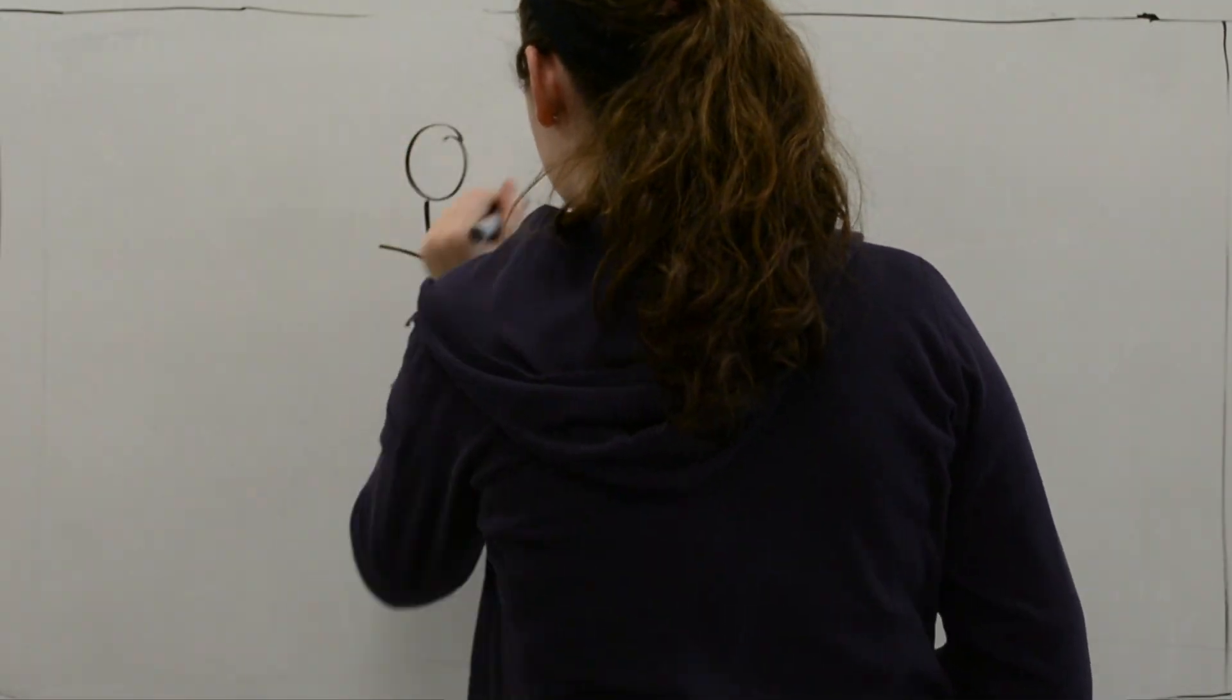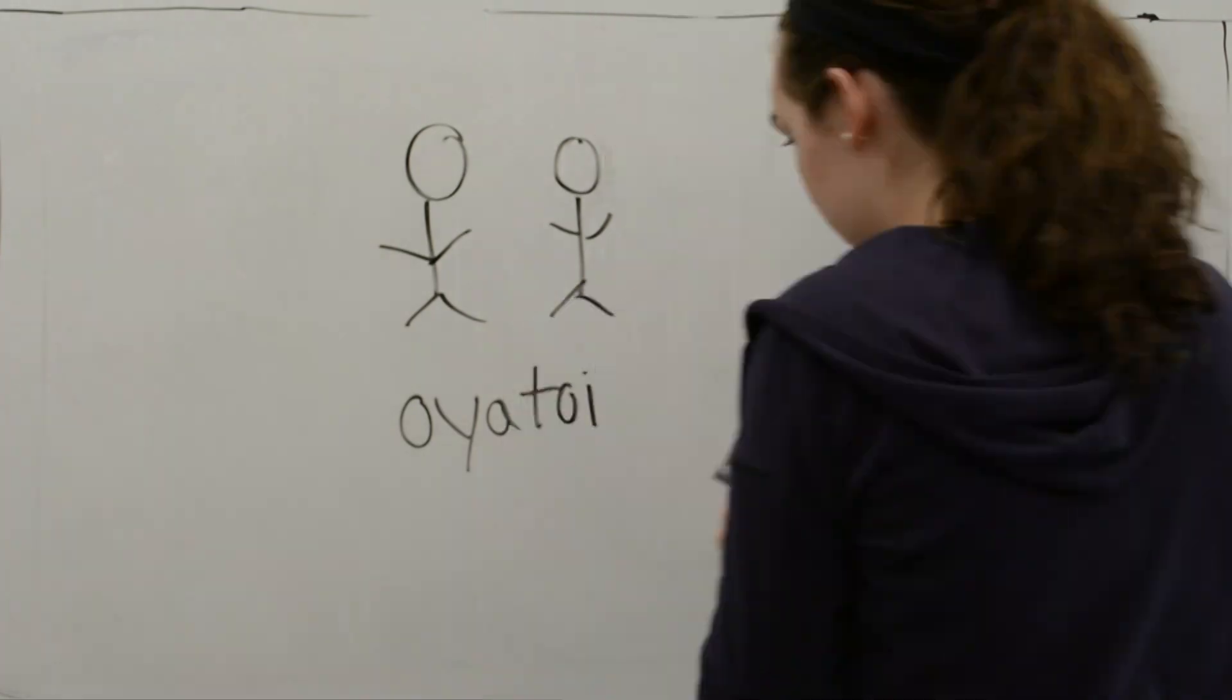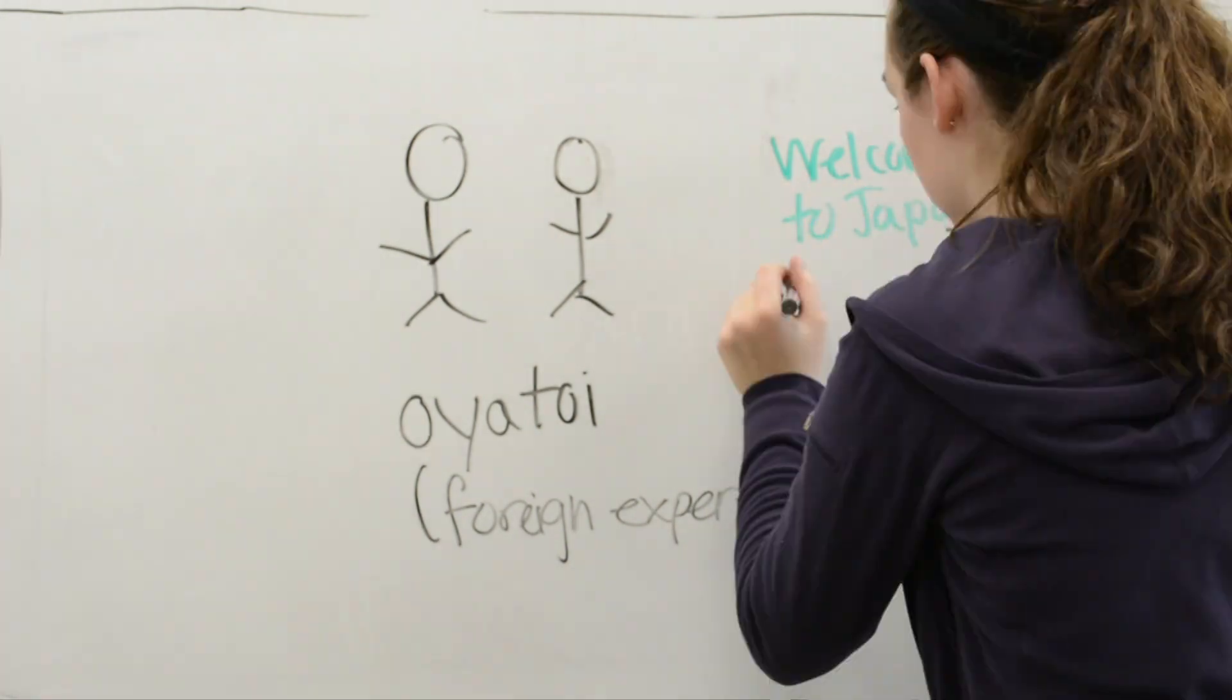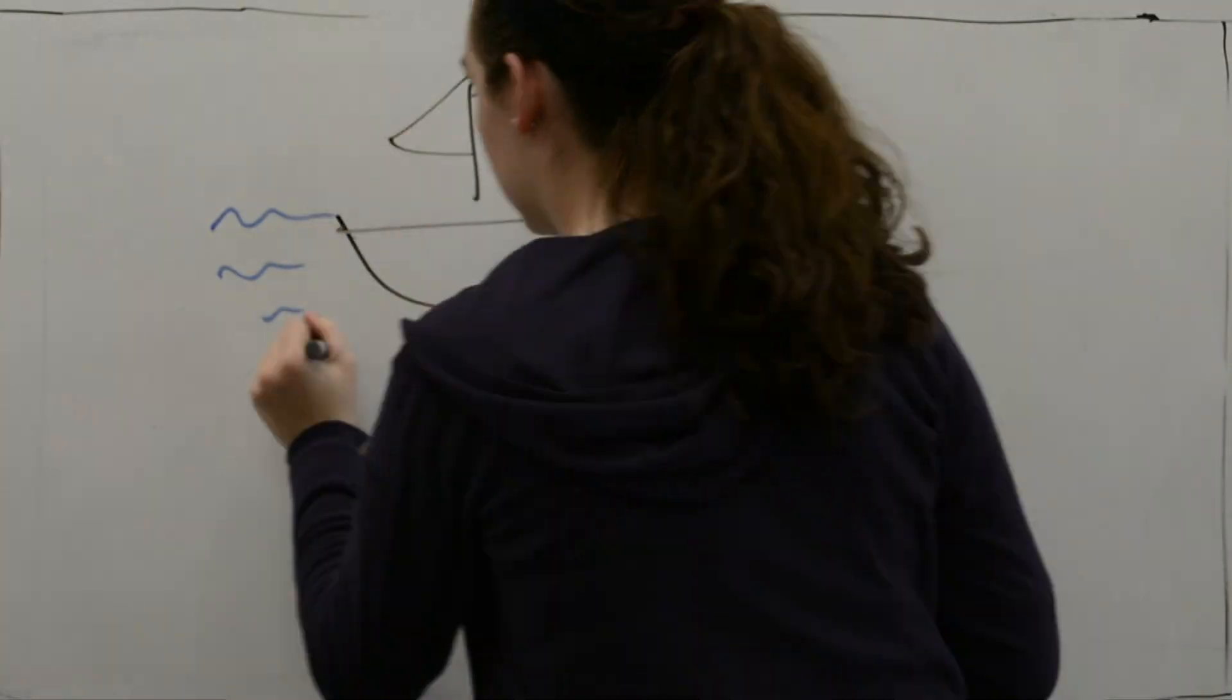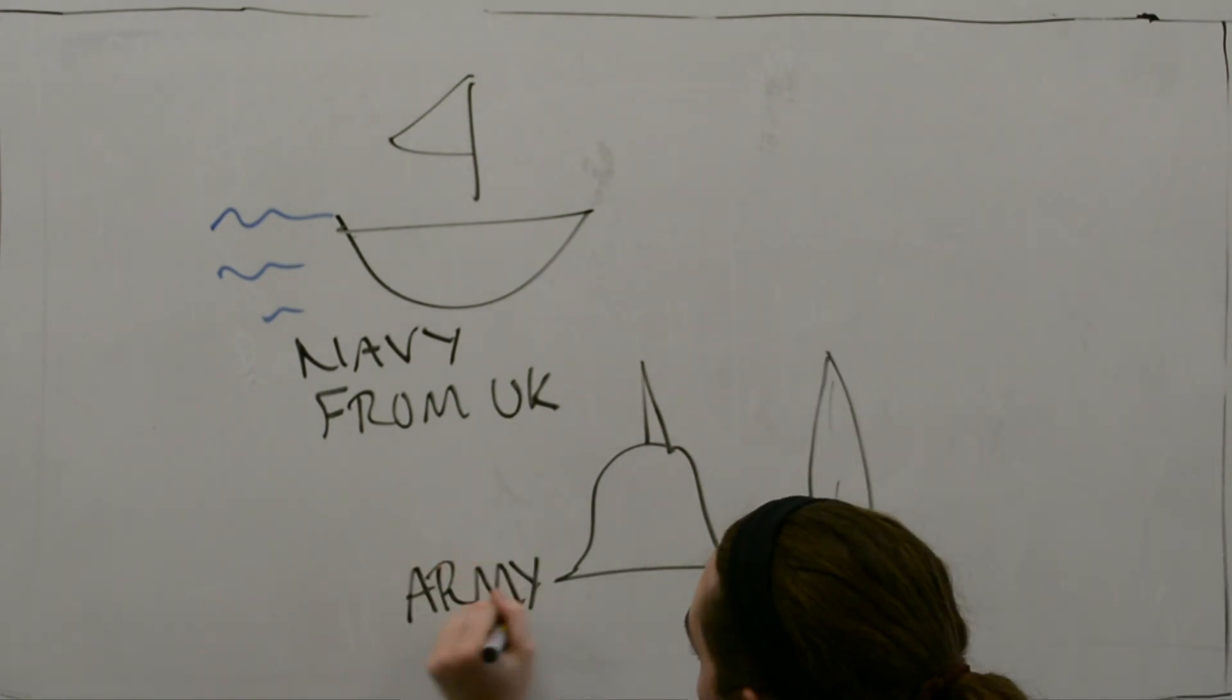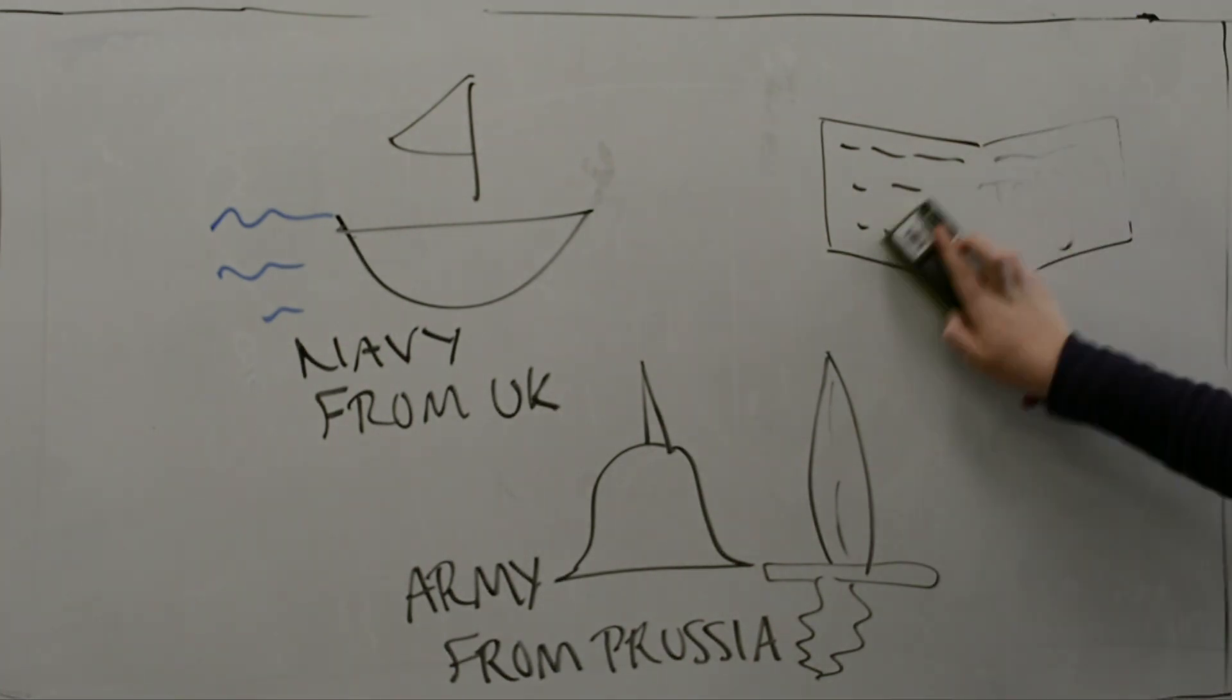The emperor then brought in foreign experts called Oya Toi, who would teach how modern societies are run. Also, Japanese people were sent abroad to gather the best parts of the nations so that Japan could create a more modern and advanced nation. And they modeled their new institutions on the best examples that they could find, like the navy from the UK, the army from Prussia, and the university and schooling became more westernized.